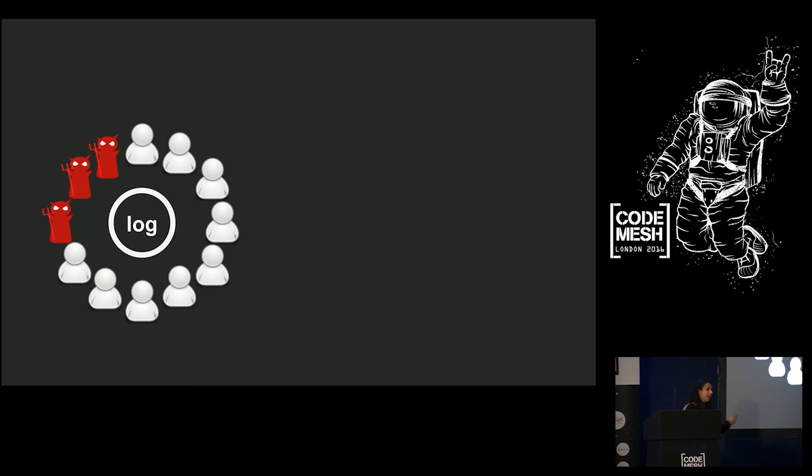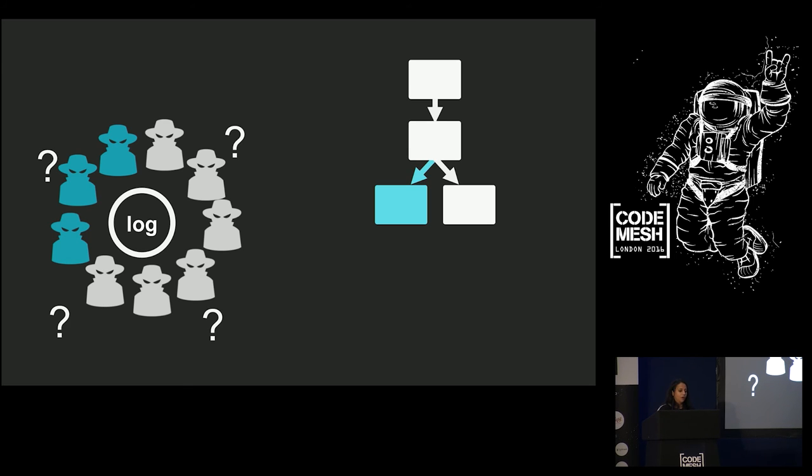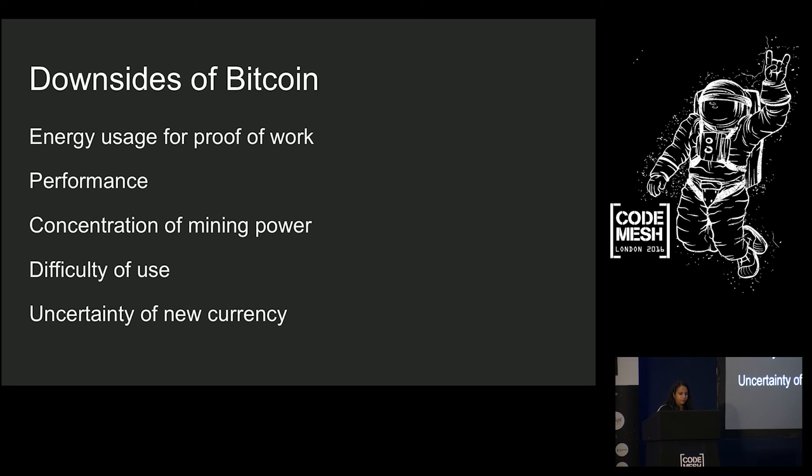And so, you know, but where before we had that BFT model of some of the actors are malicious, some of them are very faithful and are following the protocol. Now, we have this other model where everyone's a little bit mysterious. We don't even know who everyone is. We don't know who the participants in the system are. We don't know how many of them there are. We're just assuming that they're rational and that most of them won't collude. And this seems to work in practice. And as long as this is the case, then all of these non-colluding actors will construct the longest chain. And even if some of the actors decide to collude and to try to make a different chain, maybe to double spend the same coin, they're not going to have the longest chain. And so everyone's going to ignore their fork and they're going to follow the longest chain.